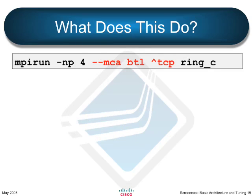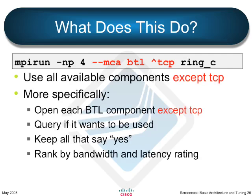Here's another trick question: what exactly does '--mca btl ^tcp' do? It uses all available components except TCP. The caret is our annotation for exclusive-not. So it will open every BTL component except TCP, then go through the same selection process — query if they want to be used, keep the ones that say yes, and rank by bandwidth and latency. We used a caret instead of an exclamation point because that would have required escaping it on the command line, and nobody wants to type slash-bang just to get a not notation.